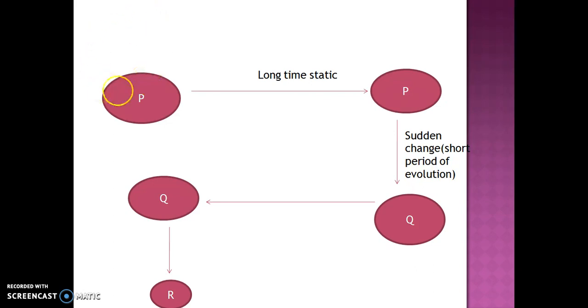With the help of this diagram you can easily understand what this actually says. This is the P population, long time static. Long time static means there will be no change. Static means stationary.